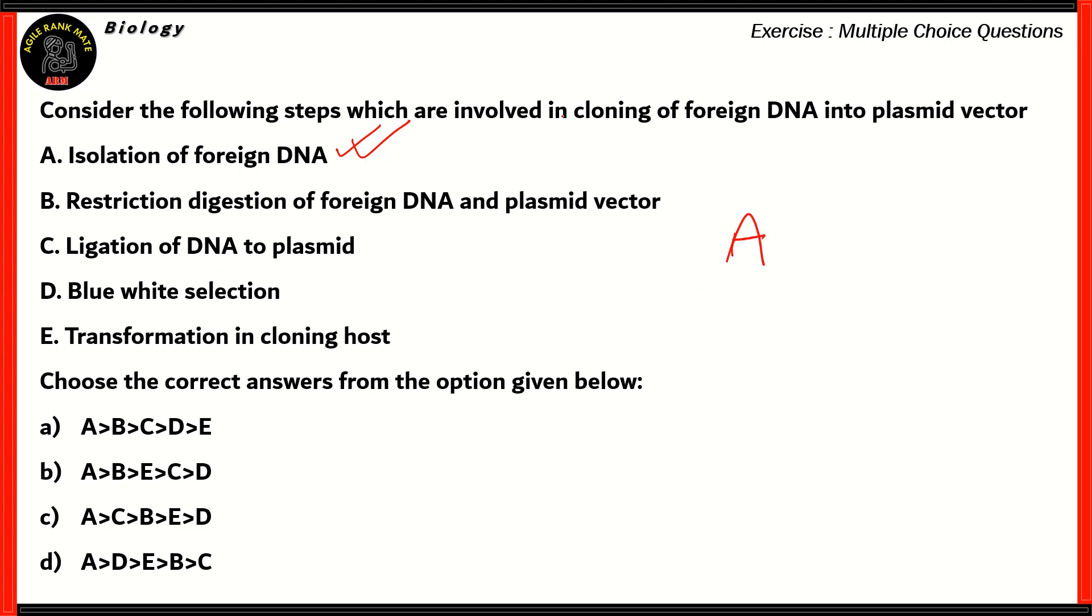Now, we're dealing with cloning of DNA and that occurs in plasmids. So plasmids are basically circular extracellular DNA found in bacteria. So these are present in special packages. Therefore, once the foreign DNA is isolated, it has to be inserted into this particular package. So therefore, it has to be ligated to the plasmid. So that's what comes next. Statement C. So A greater than C.